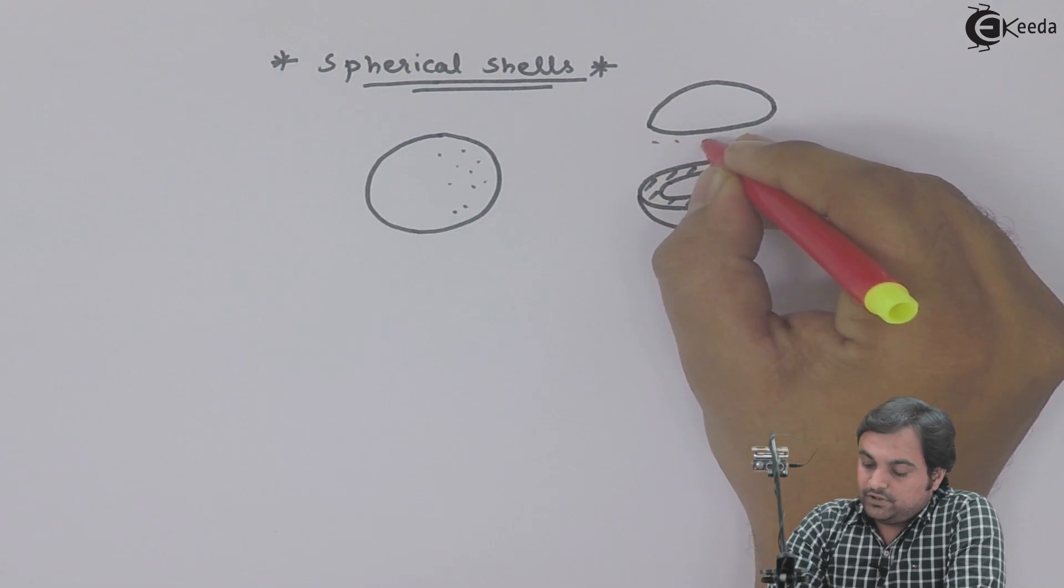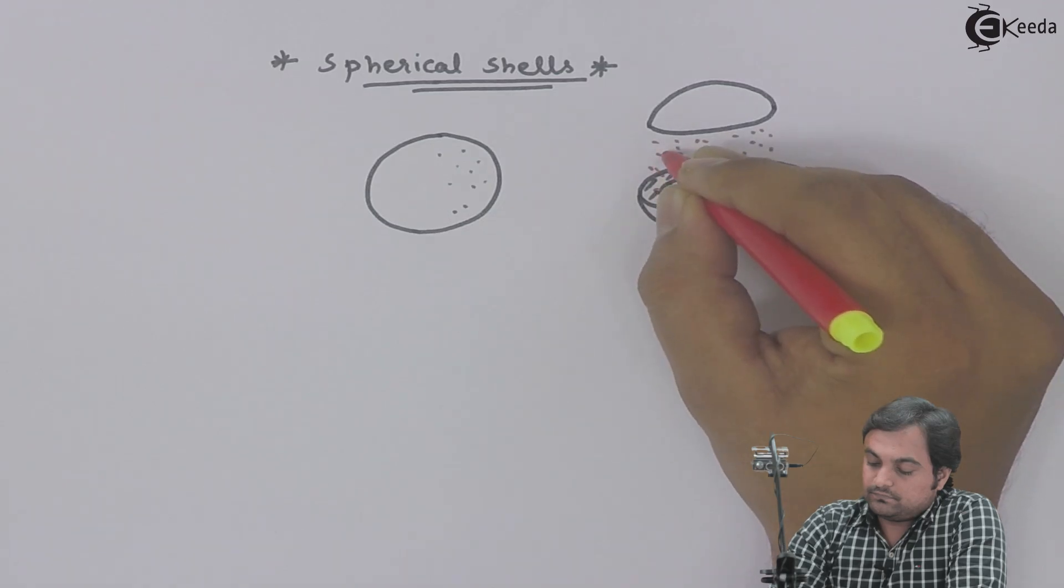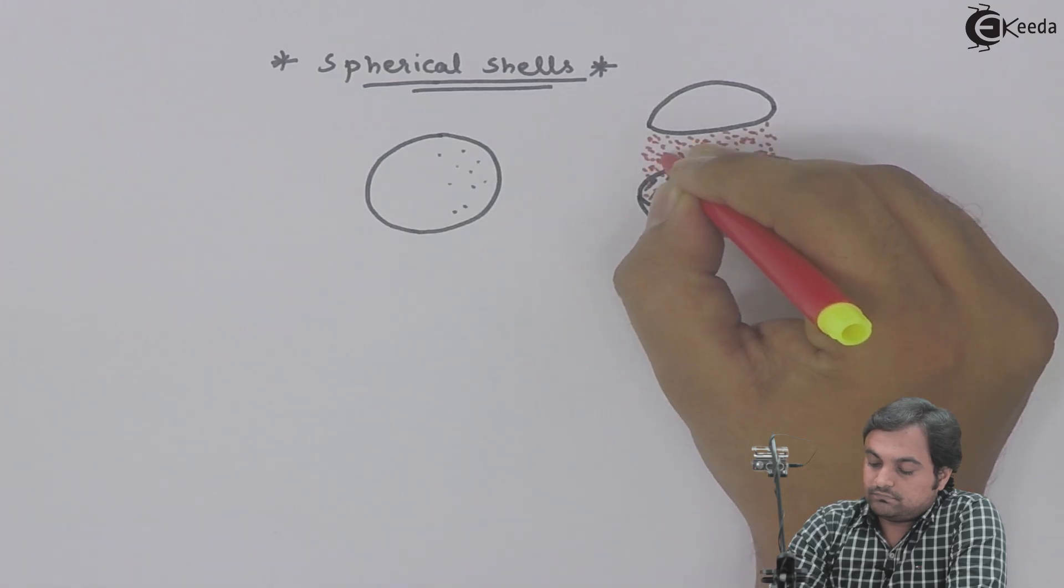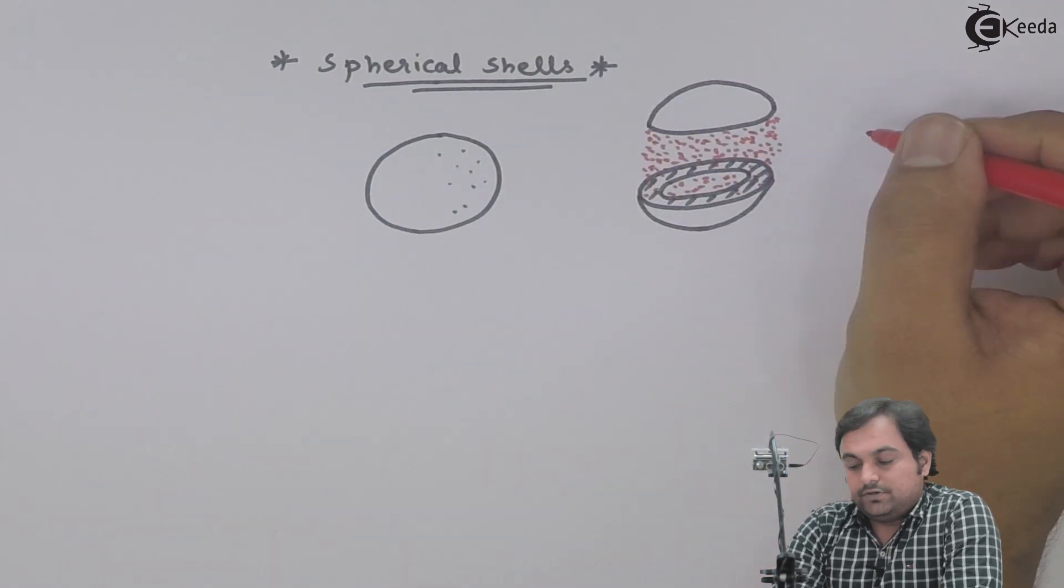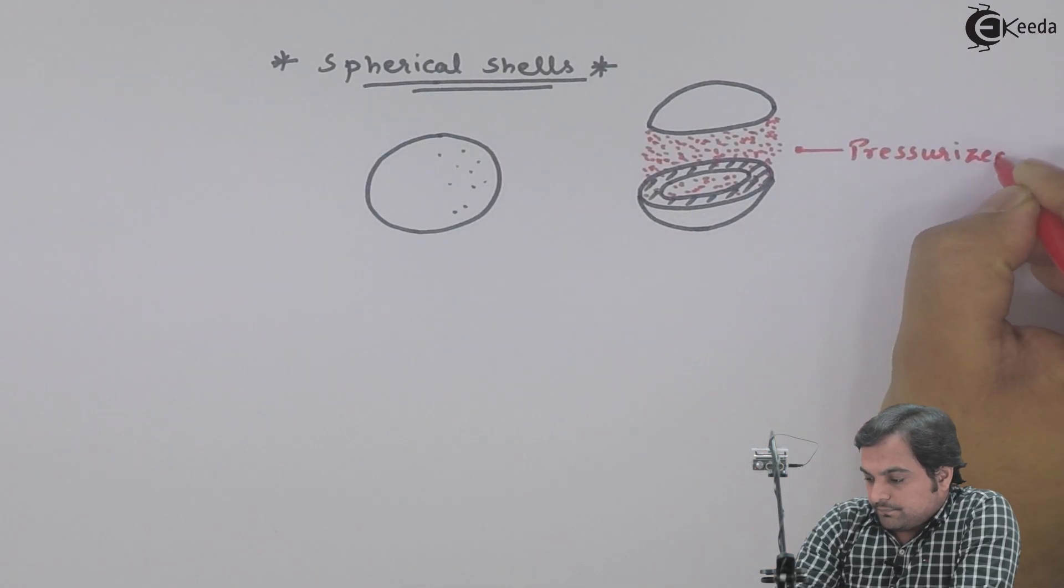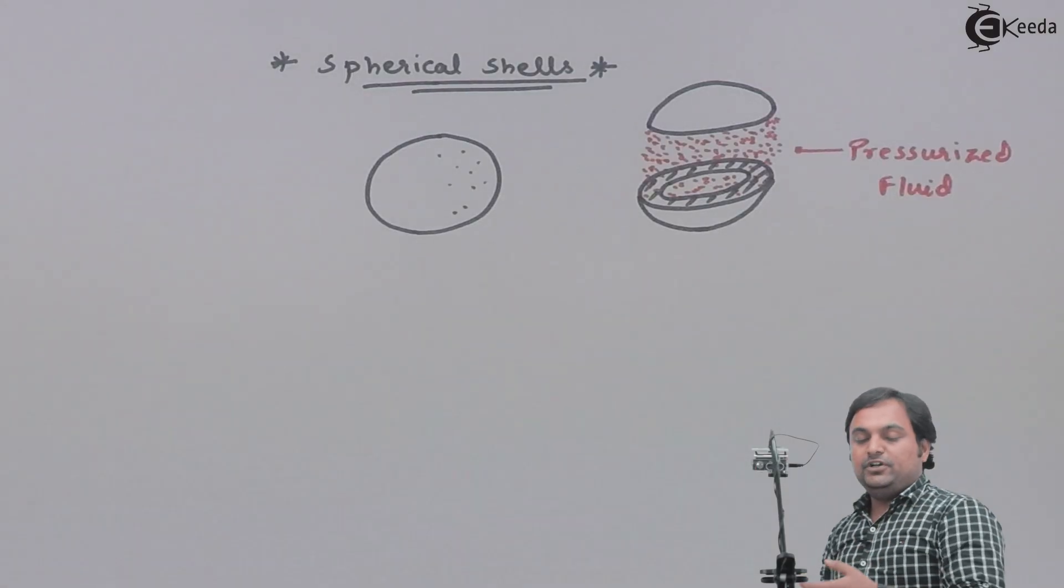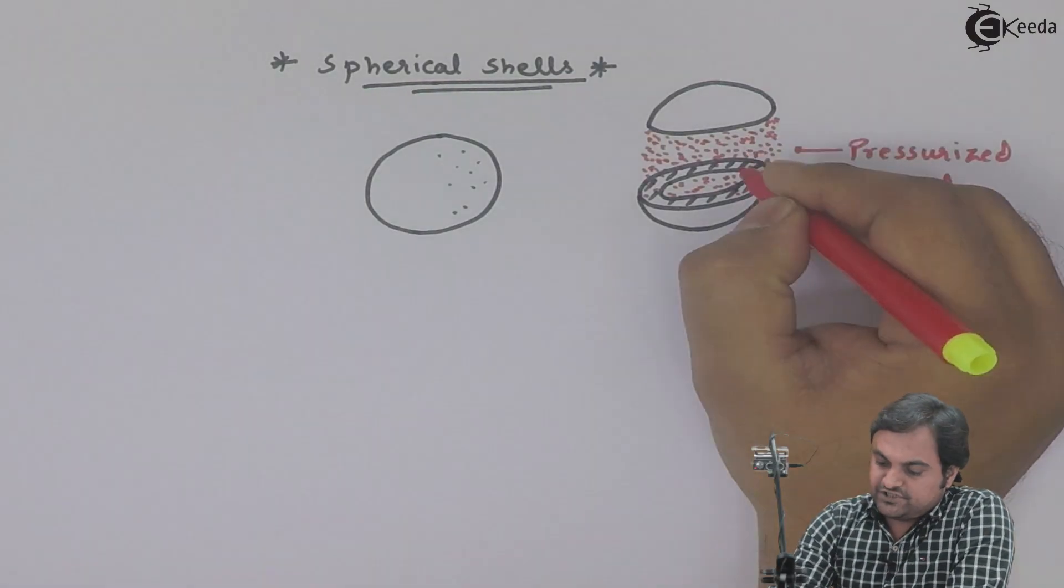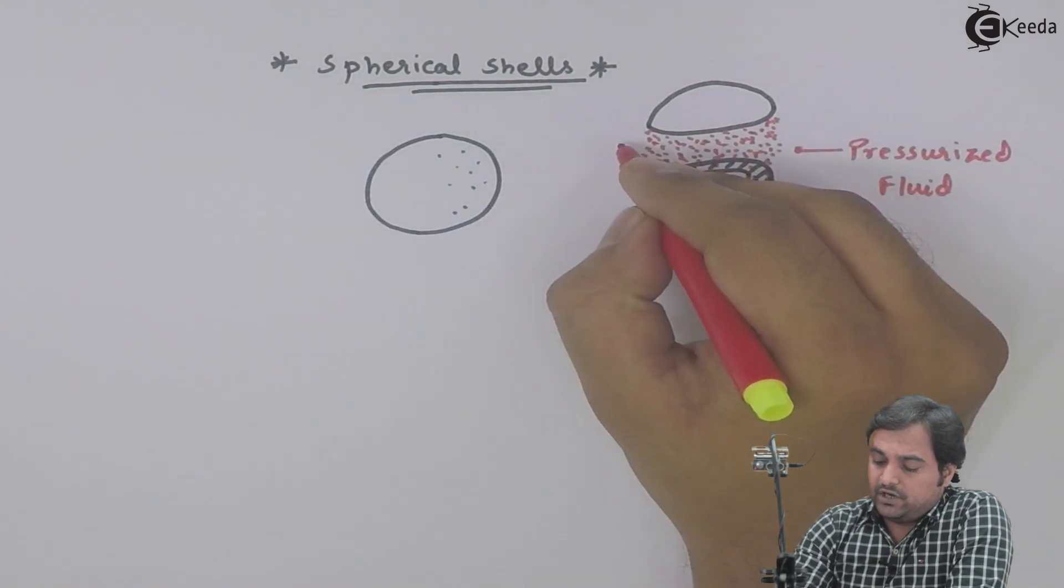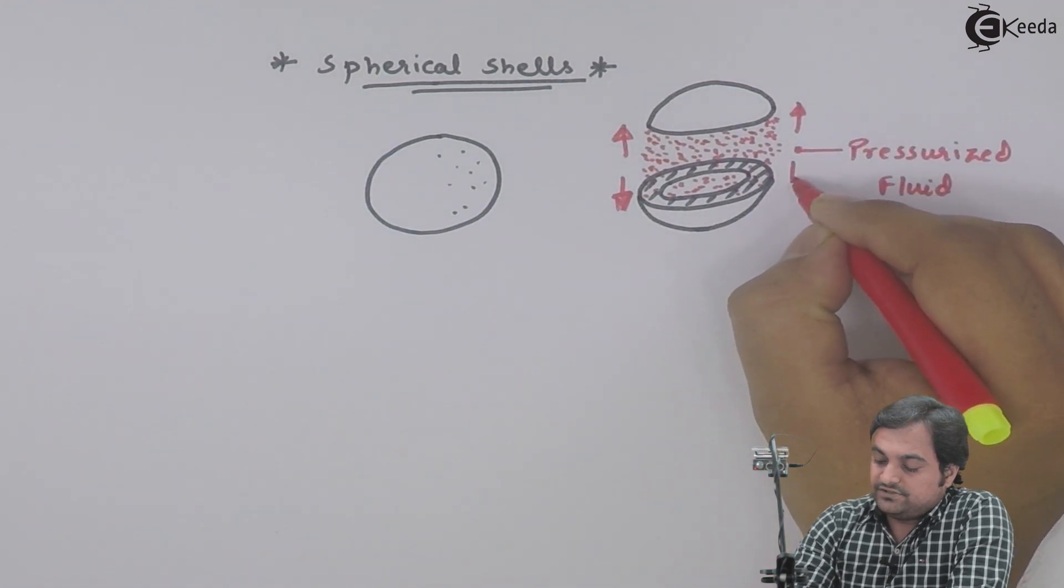As we can see here, because of the internal fluid pressure, we have this pressurized fluid. Because of this, the fluid will produce a bursting force which splits the spherical shell into two halves. The bursting force is tearing this spherical vessel.